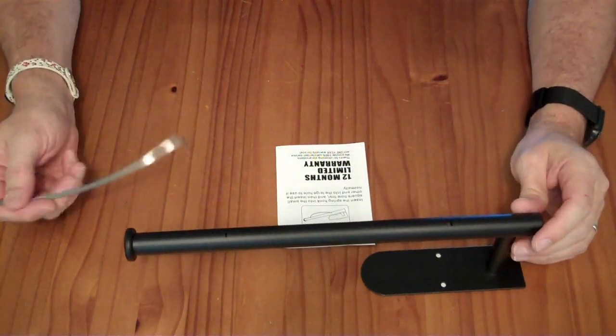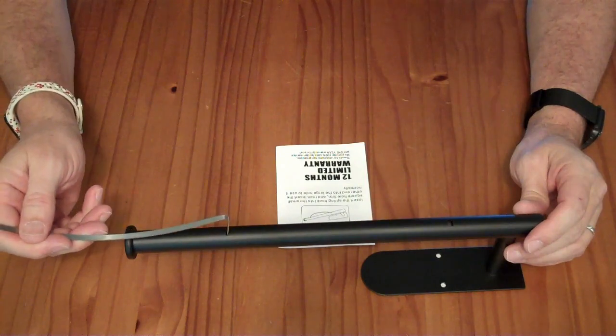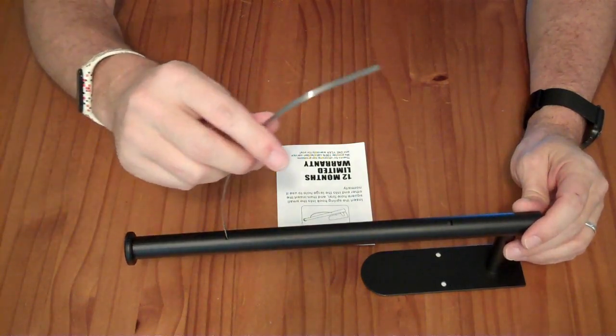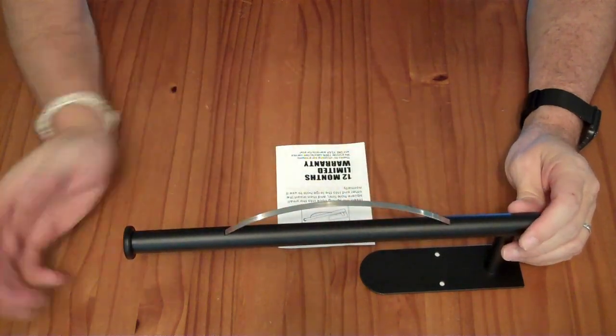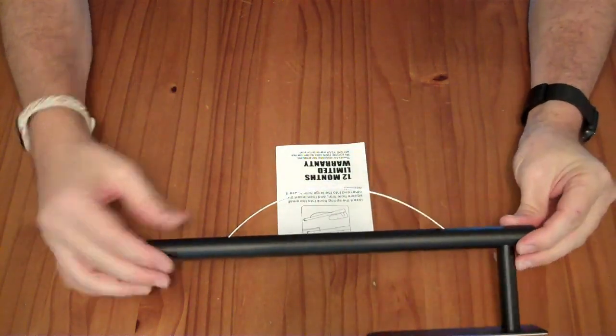So it says insert the spring hook into the small square hole first, and then insert the other end into the large hole to use it. That was easy enough to do.